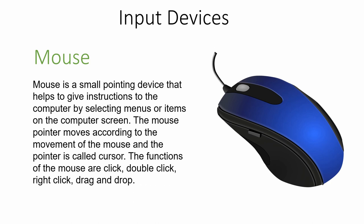This cursor moves with the movement of the mouse, and whenever we click on any items or select any menus, the functions are performed by the computer system. Mouse clicks are instructions to the computer — it may be a single click, double click, right click, or left click. Drag and drop is another function of the mouse that helps to move files and folders from one location to another.